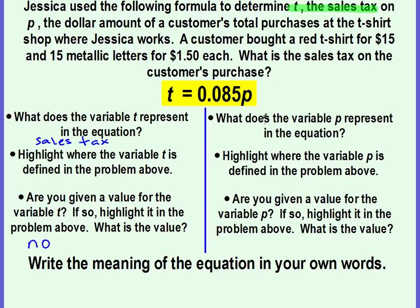Okay, then what does the variable P represent in the equation? So P is the dollar amount of a customer's total purchases. So we can write total purchase amount. And then it says to highlight where the variable P is defined in the problem above. I would use a different color highlighter. If you don't have a highlighter or a different color then you can circle it if you want or use a pen. So P is the dollar amount of the total purchase.